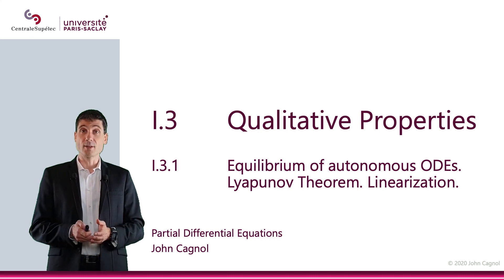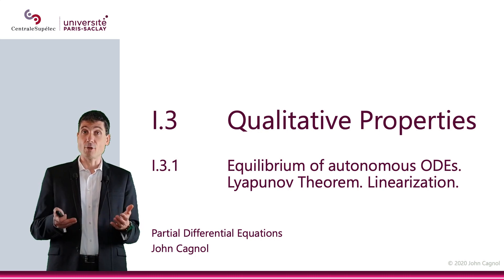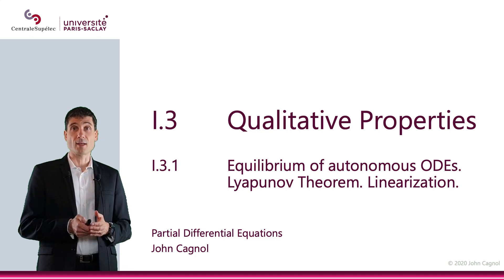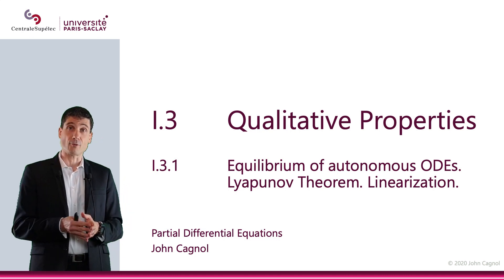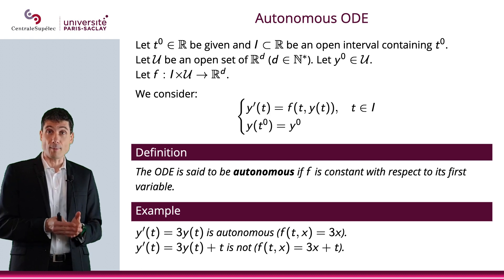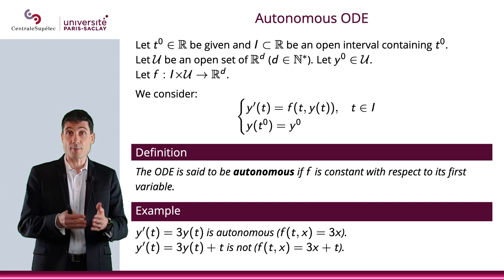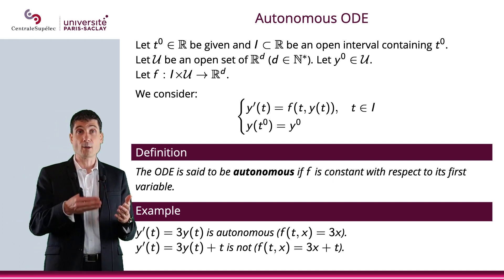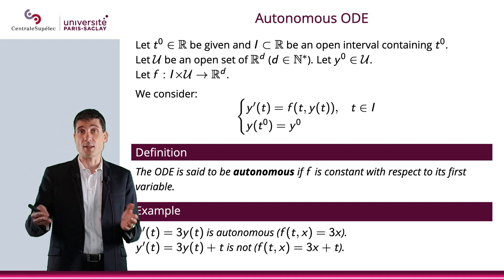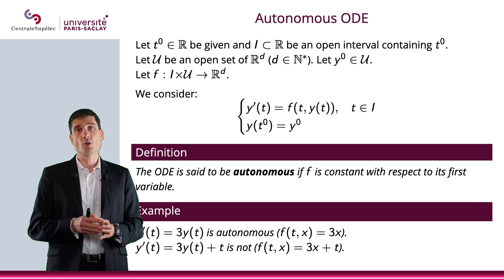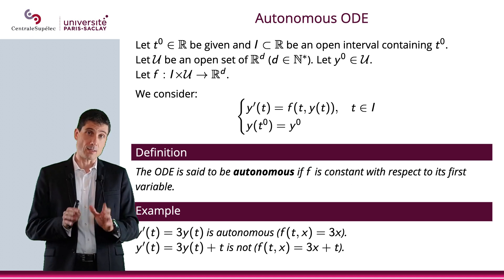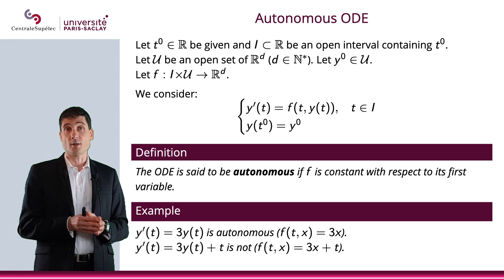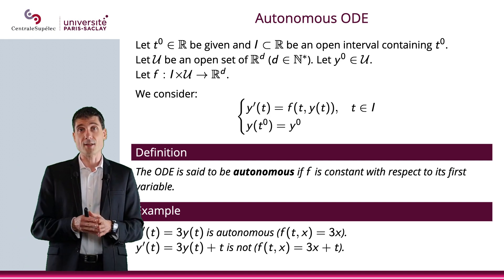In this section, we will discuss the equilibrium of an autonomous ODE. We have described our ODEs with the formula y' equals f of t, y of t, which is a very general form. If we add the initial condition y of t0 equals y0, then we have an initial value problem.